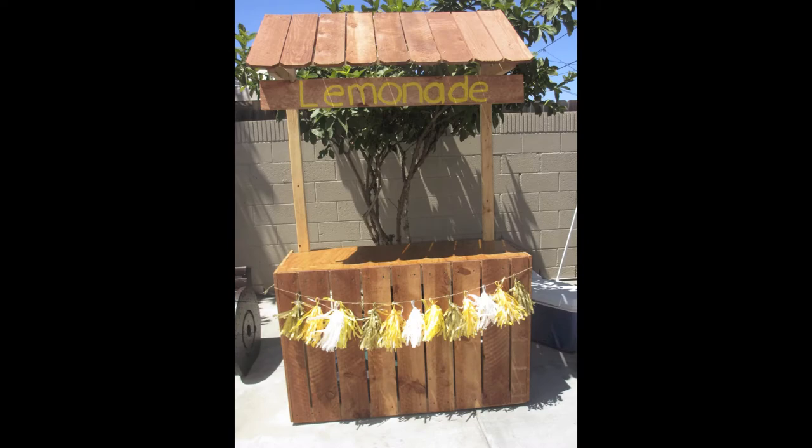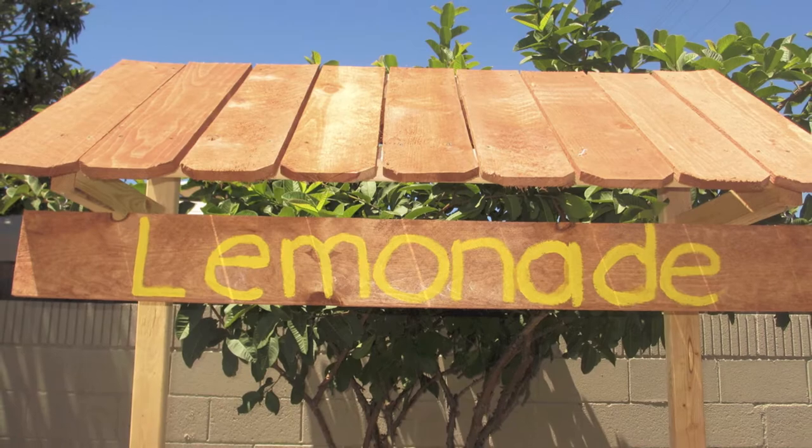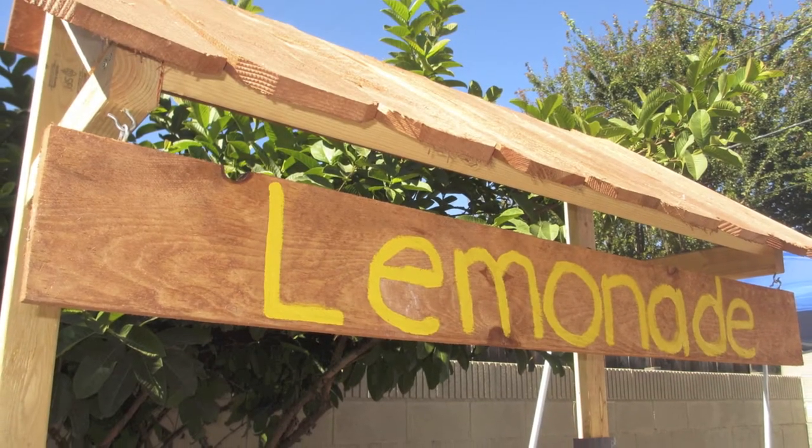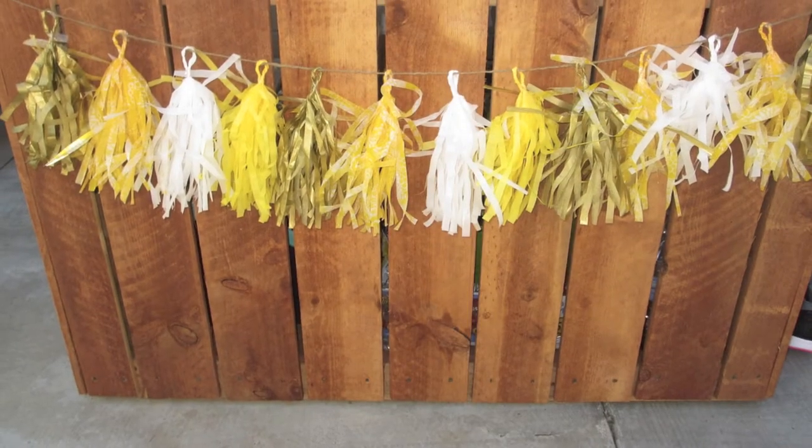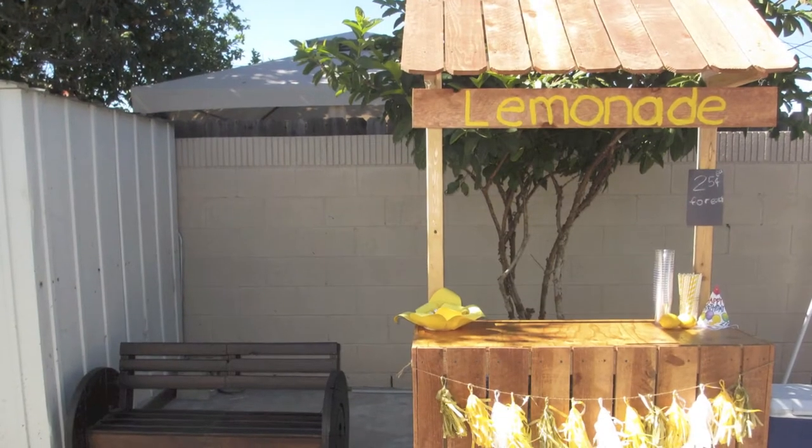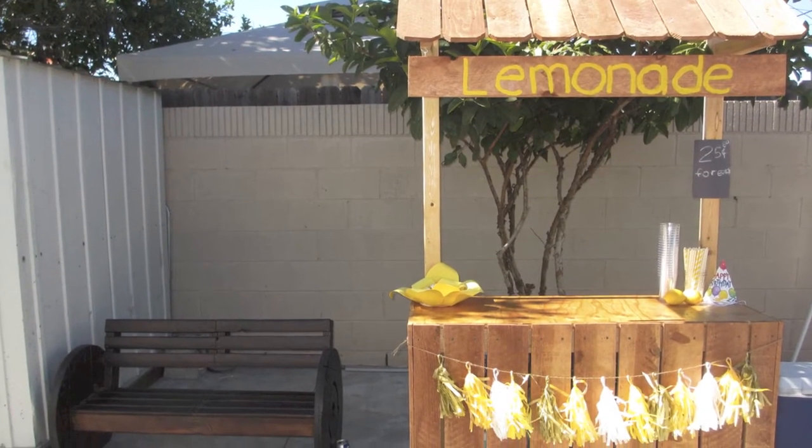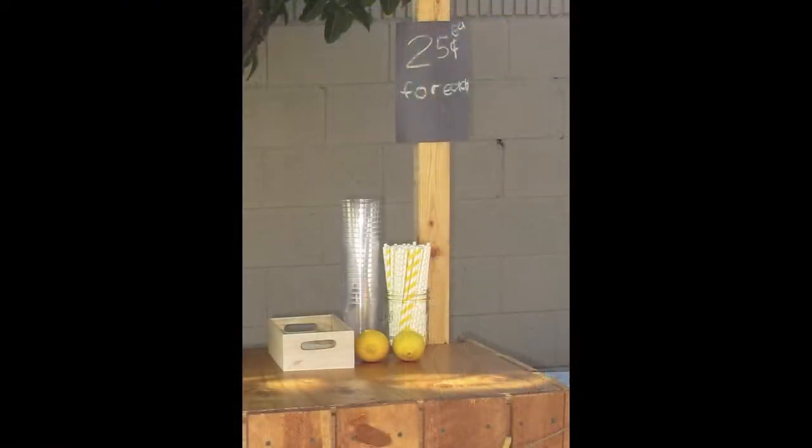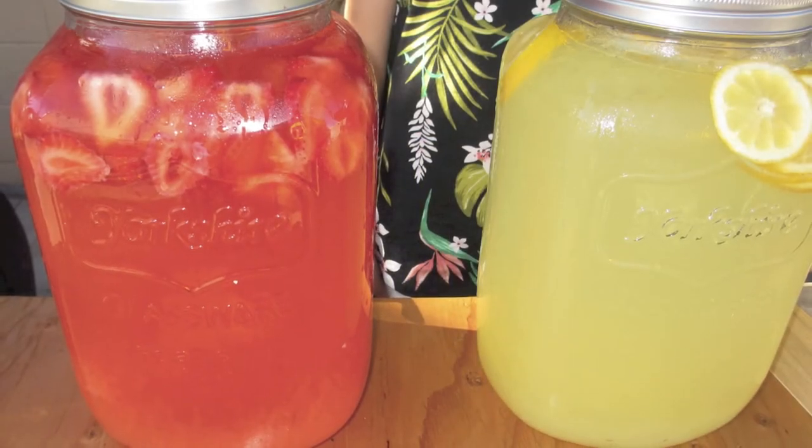The main attraction of the party was this lemonade stand. My brother built it. He used wood from Home Depot. He painted the word lemonade hanging from the roof. My sister did a tassel banner to decorate it. We got glasses and straws. It was twenty-five cents per cup. My niece would serve the lemonade and put the money in that box. It was really cute to see her.